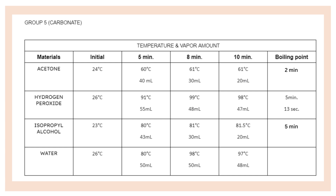As the timer hit the 10-minute mark, their final temperatures were: acetone at 61 degrees Celsius, hydrogen peroxide at 98 degrees Celsius, isopropyl alcohol at 81.5 degrees Celsius, and water at 97 degrees Celsius. For the boiling point of the liquids, acetone attained the fastest boiling point at approximately 2 minutes, while hydrogen peroxide attained the slowest boiling point at approximately 5 minutes.